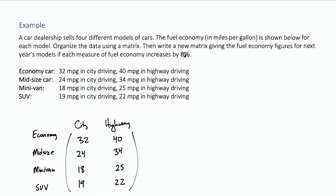And then if we're looking at an increase of 8%, that means we need to take each of these numbers and increase by 8%. That means we're going to multiply the matrix by 1.08. The 1 represents the fuel economy here, and then the 0.08 represents the added 8%. So 1.08 times that matrix.